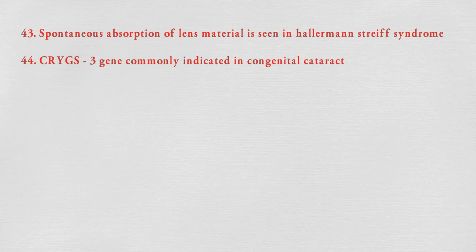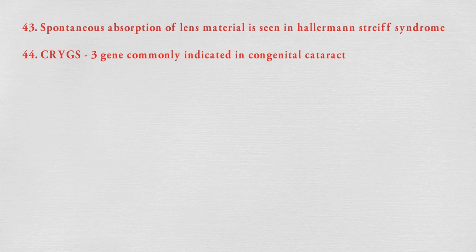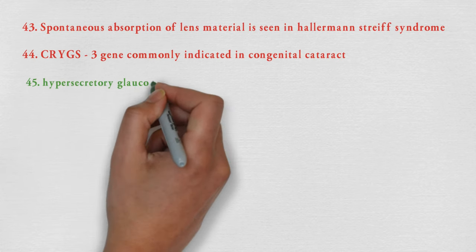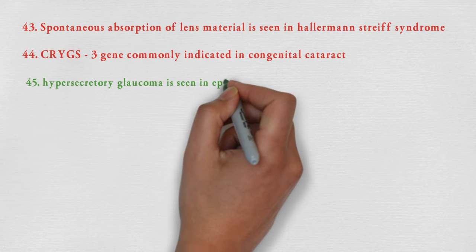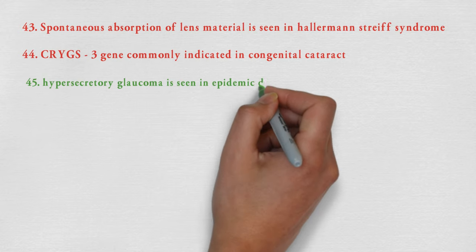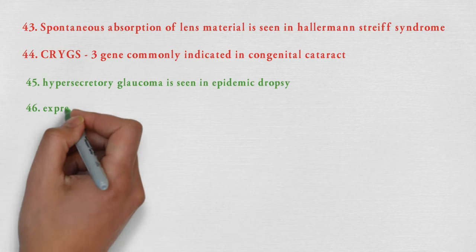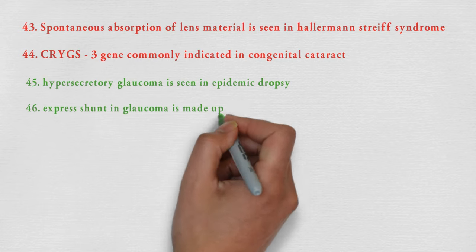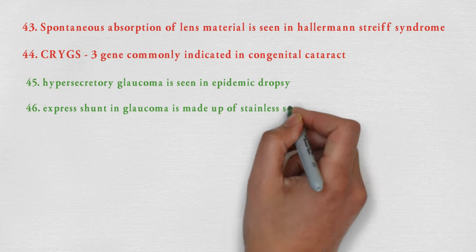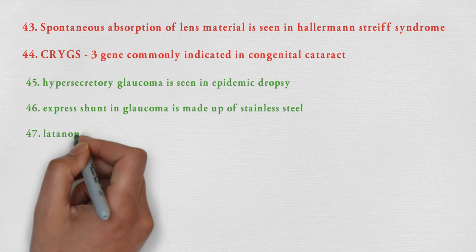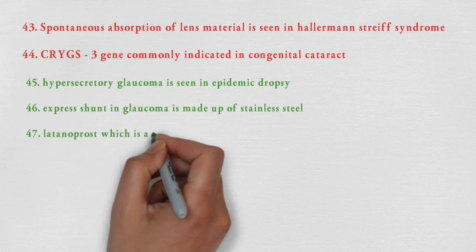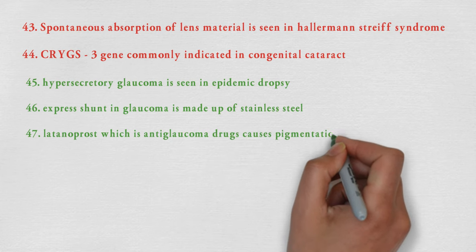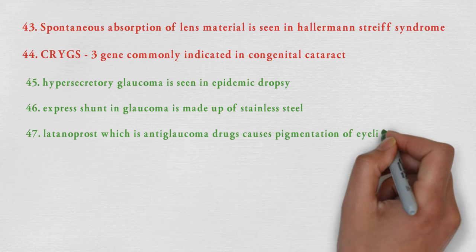CRY-GST gene is commonly implicated in congenital cataract. Now let's move toward some important points from glaucoma. Hypersecretory glaucoma is seen in epidemic dropsy. Express shunt in glaucoma is made up of stainless steel. Latanoprost, which is an anti-glaucoma drug, causes pigmentation of the eyelid.